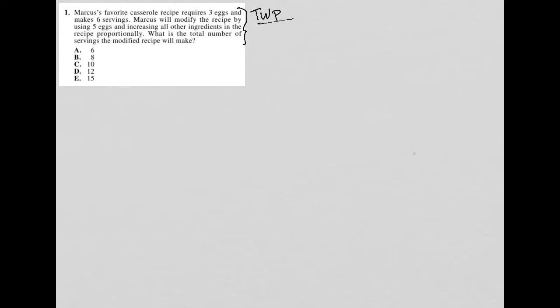This question says Marcus's favorite casserole recipe requires three eggs and makes six servings. This looks like it's going to be a translate word problem question. We know that because the question is longer than four lines. So typically if the question is four or more lines long, we want to translate it. All that means is that we want to stop at the end of each sentence, make sure we understand what we're reading before moving on, and translate anything into a mathematical equation — anything quantitative from the question.